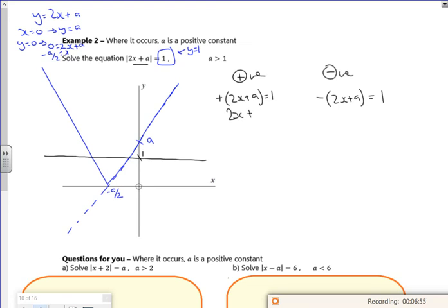So 2x plus a is 1. So I'm going to have 1 minus a divided by 2 is x. So that's fine, isn't it? I've got a minus 2x minus a is 1. So if I flip it over, I've got a minus a minus 1 is 2x. So minus a minus 1 all over 2 for x. Or you can take the minus 1 out as a fraction.